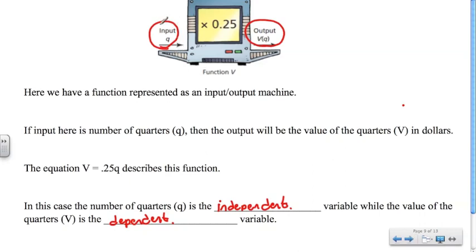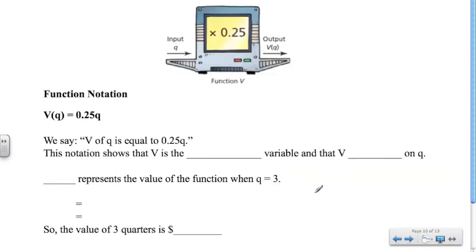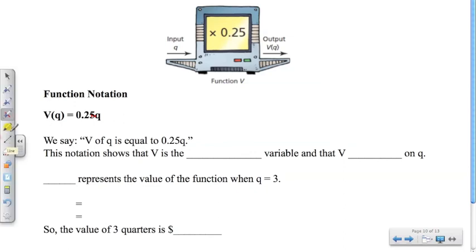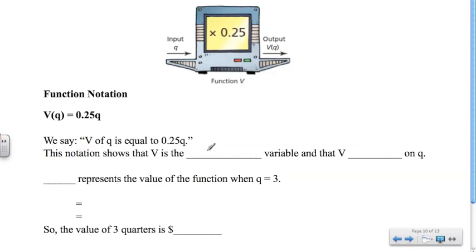As a rule, the independent variable is always on the left, and the dependent variable is always on the right when we talk about the values of relations and domains and ranges. Let's talk about function notation. As convention, we write V of Q is equal to 0.25Q. This notation shows that V is the dependent variable and that V depends on Q.